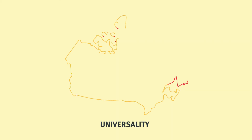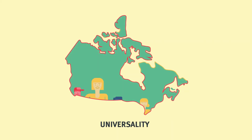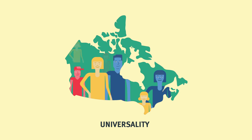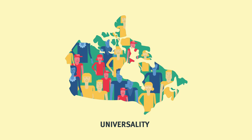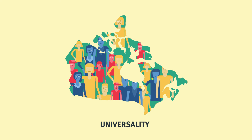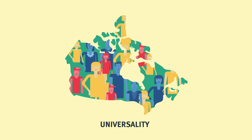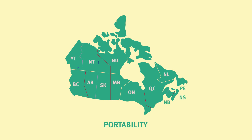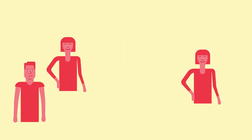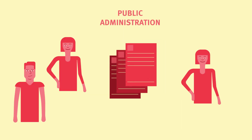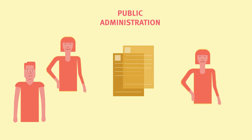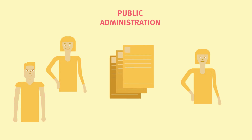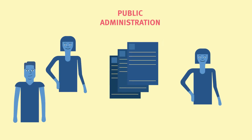One, universality. This means that all insured persons living in a province or territory are entitled to insured health services under the same terms and conditions as everyone else. Two, portability. Residents who move to another province must continue to be covered for health services by their home province. Three, public administration. This ensures that health care plans are administered and operated on a non-profit basis by a public authority.